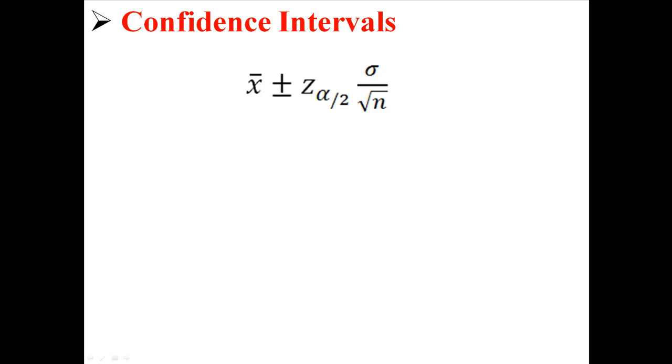This is the equation for a confidence interval about the mean. It looks kind of complicated, but I'll explain it. Let's say we have a distribution like this. Most of the time we're going to want to be 95% sure, we're going to want to be 95% confident.